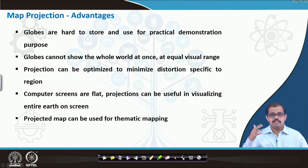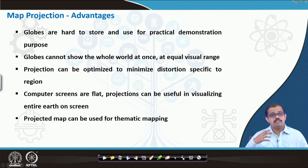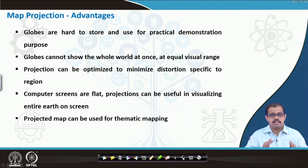Globes are hard to store; you cannot always carry and store globes everywhere, and it is practical only for small presentations or for explaining things for small reasons. But when you are actually looking at the entire phenomena or the properties on the ground, globes may not be so handy. If the globe showcases the entire world at once it is equal to the visual range, but projections can be optimized with minimum distortion specific to that particular region only — you can be very specific to that region.